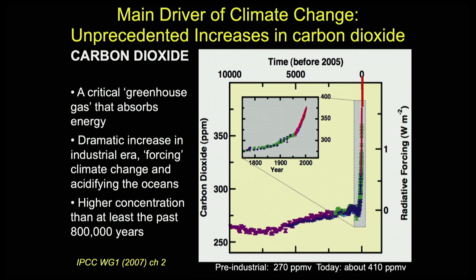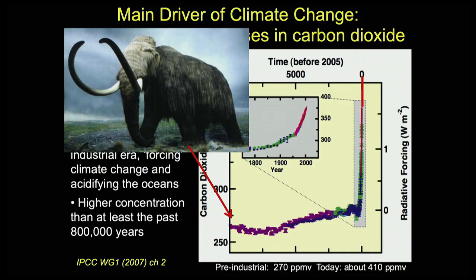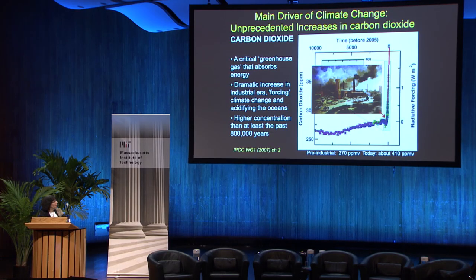The last few years have shot up even faster. Today we're up to about 410 parts per million of carbon dioxide in our atmosphere, compared to only 270 in the pre-industrial era. You can see there's not a whole lot of up and down for thousands of years, and then suddenly—boom. Carbon dioxide is a critical greenhouse gas that absorbs energy, so that dramatic increase is forcing our climate to change. We know from ice core data that this is a higher concentration than at least the past 800,000 years. It's only since the Industrial Revolution that it's gone shooting up like this because of the burning of fossil fuels.